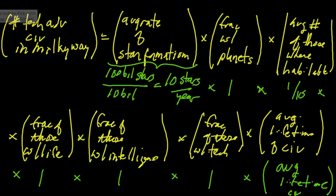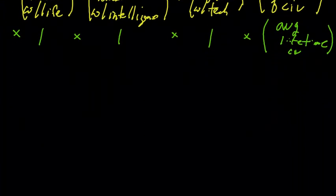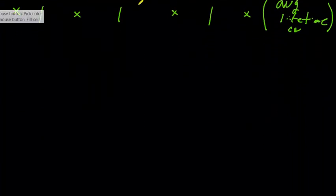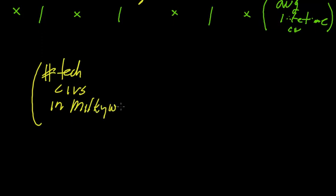So now what we have is our 10 here cancels with 1 over 10 and everything else is 1. And so the equation actually simplifies down rather nicely. Essentially that the number of technologically advanced civilizations in the Milky Way right now is equal to the average lifetime of those civilizations.